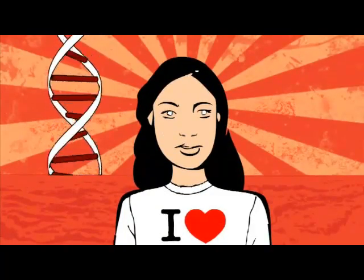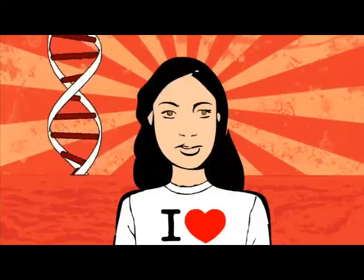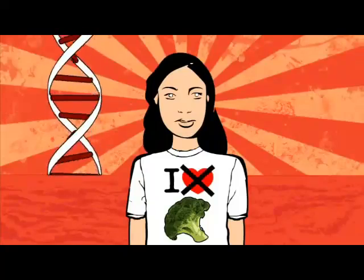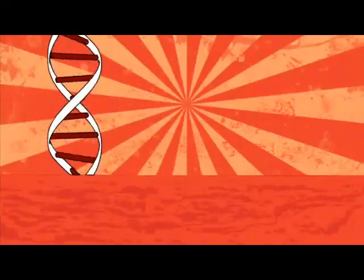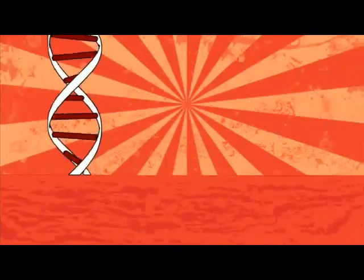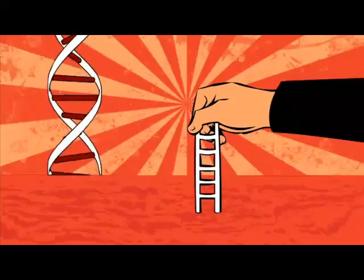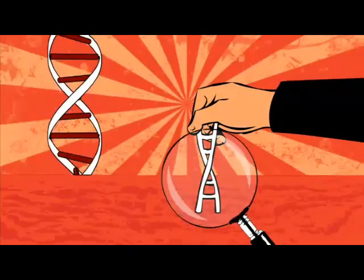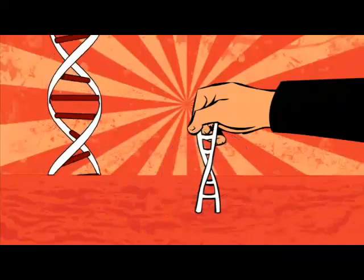Hair colour, eye colour, hatred of broccoli — maybe, maybe not. DNA is shaped like a double helix, like a ladder that's been twisted into a spiral. A very small ladder.